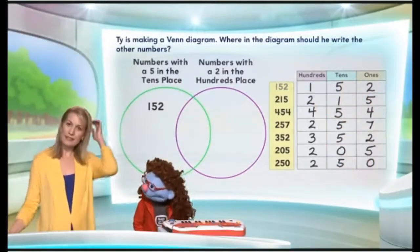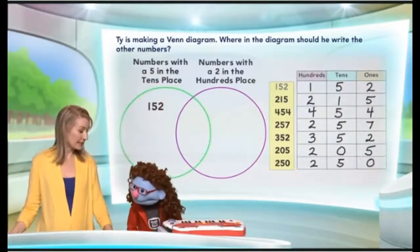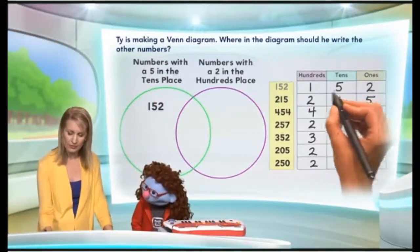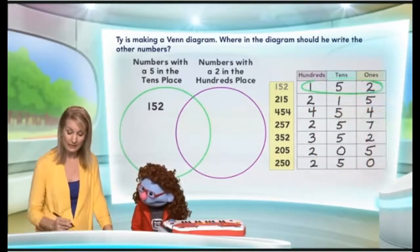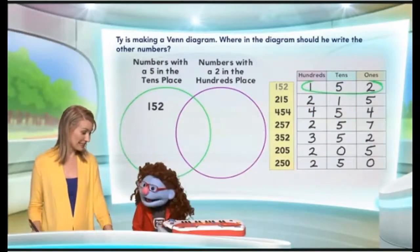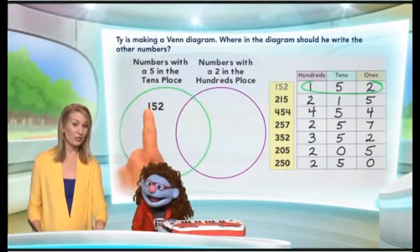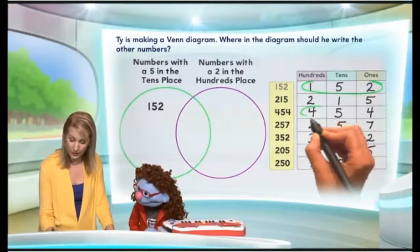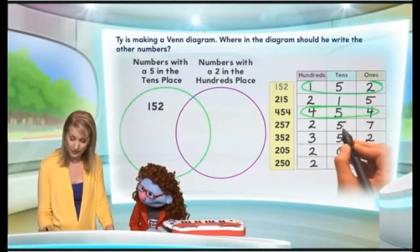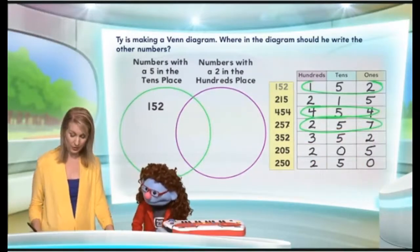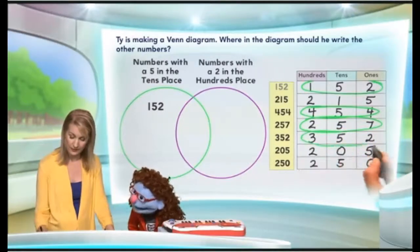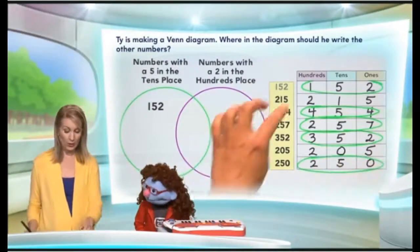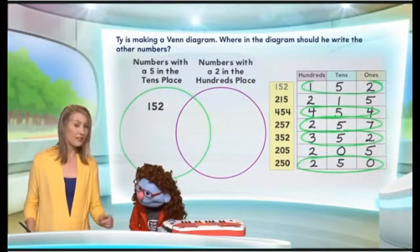Now I want to go through our table and notice the numbers that have a five in the tens place. We're going to look in the tens column here. So look at 152 — it has a five in the tens place, and that's where we put it in the circle. There are a few more, like 454, 257. Do you want to find the others? There's 352. And 250. Yes! So these are the numbers where there is a five in the tens place.